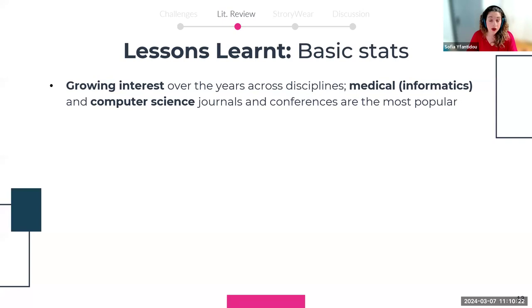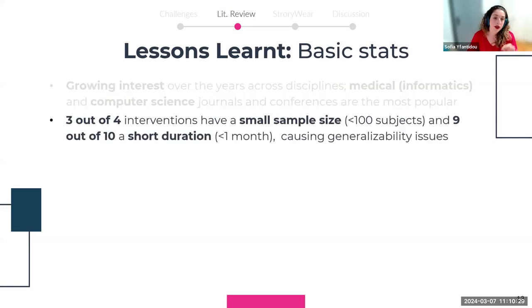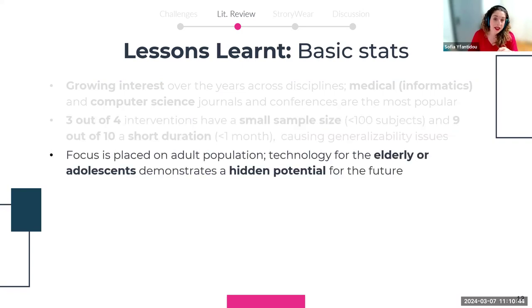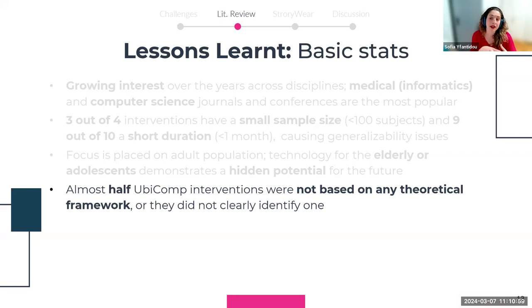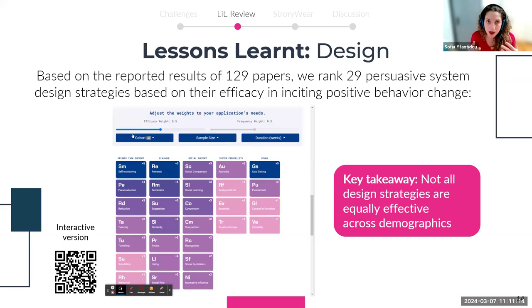We ultimately included 129 studies in our review. First, there is growing interest in utilizing mobile and wearable technologies for health behavior change, particularly within medical informatics and computer science. Second, three out of four interventions have a sample size fewer than 100 subjects, and nine out of ten have a duration shorter than one month, raising questions about generalizability. Third, the focus is shifted to adult populations, yet elderly and adolescent groups who are most affected by physical inactivity show hidden potential. Finally, almost half of ubicomp interventions did not base their design on any pre-existing theoretical framework for behavior change.